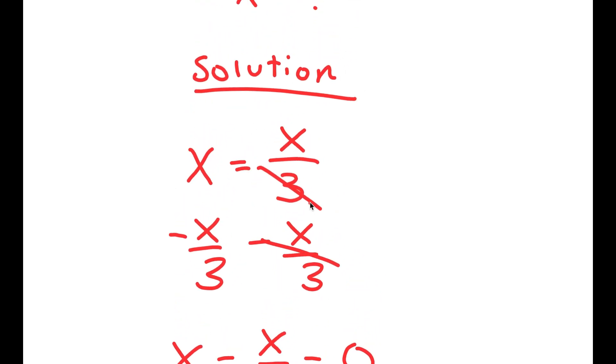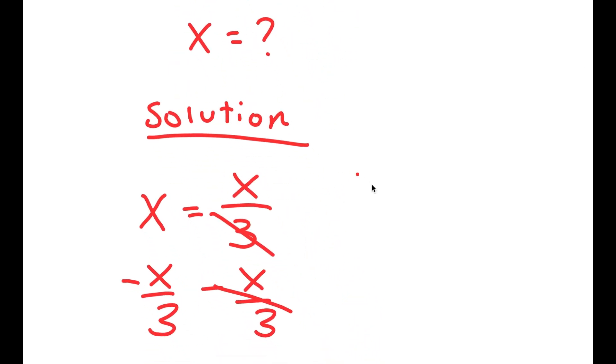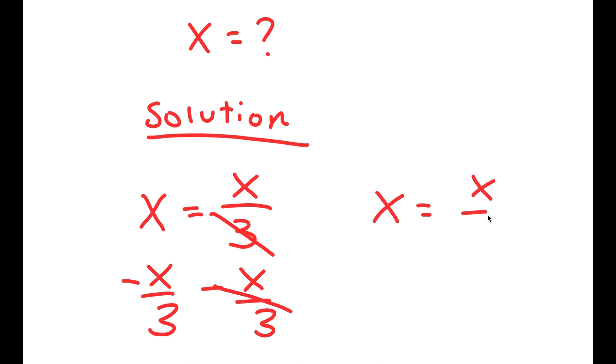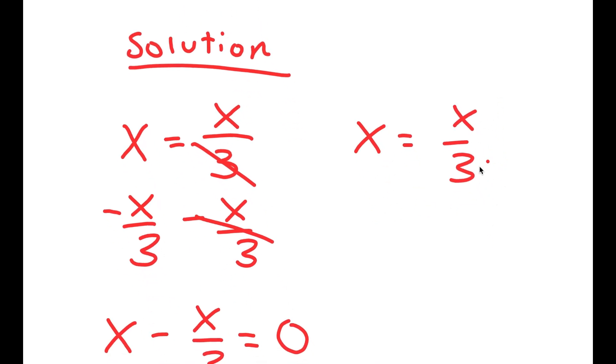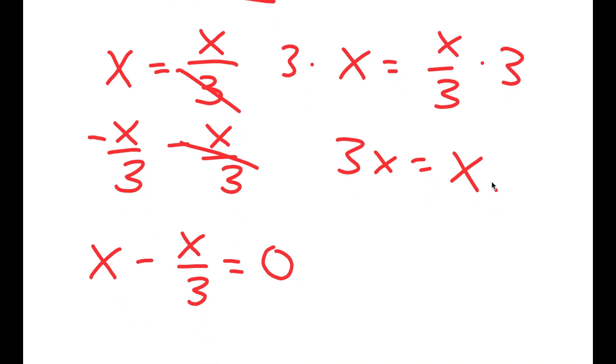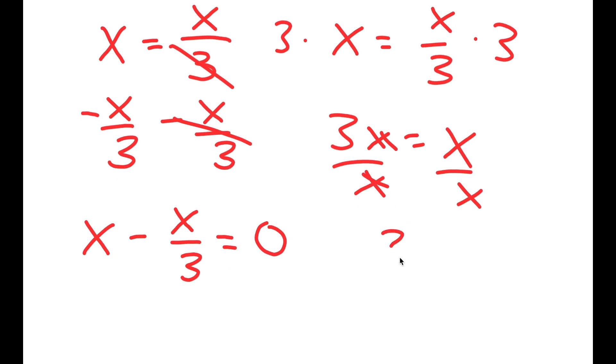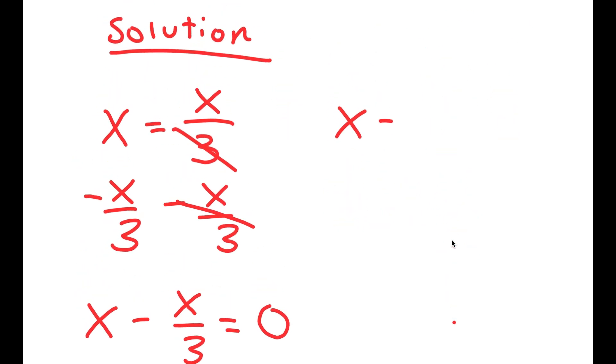Now, a common mistake that most people do to solving this equation is they multiply both sides by 3. So I get 3x is equal to x. And then they divide both sides by x. So they get 3 is equal to 1. And this is an invalid statement. So that is the wrong way of solving this.